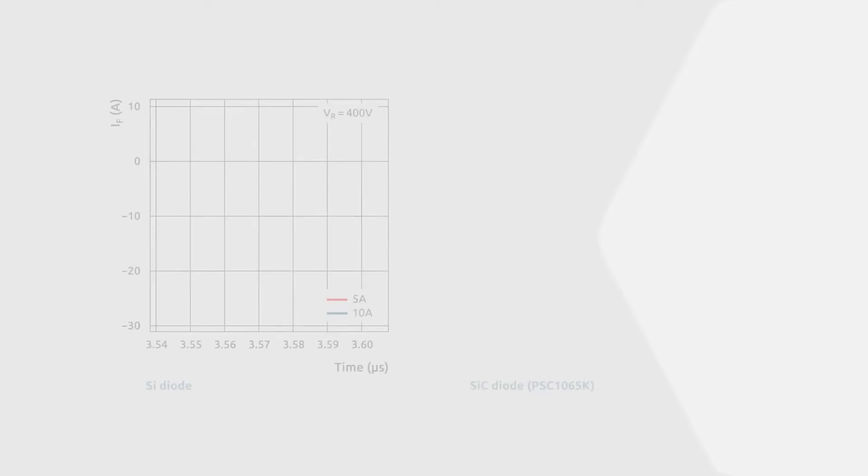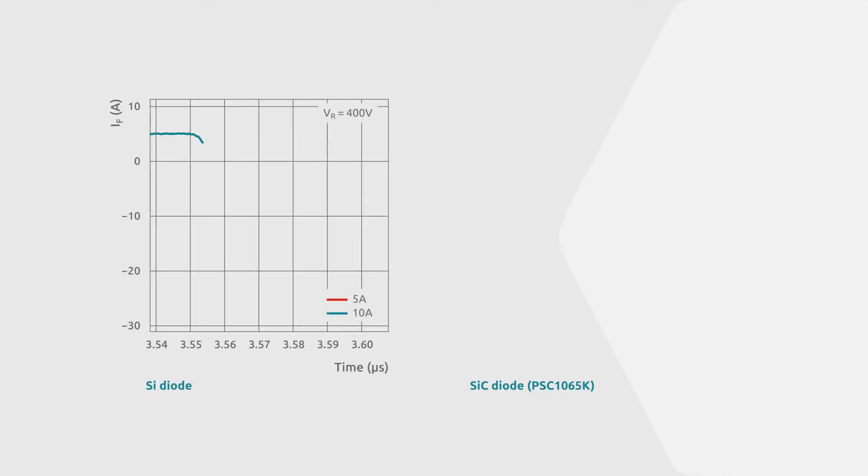In the case of SiC diodes, the much smaller reverse charge is caused only by the self-capacitance. During turn-off, this results in nearly no loss in the diode itself and much lower power dissipation in the corresponding transistor.